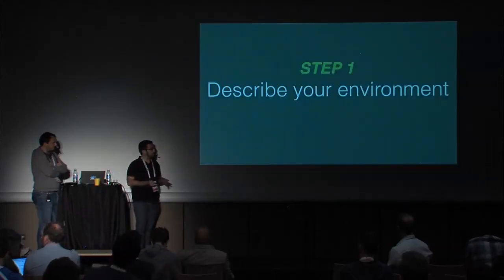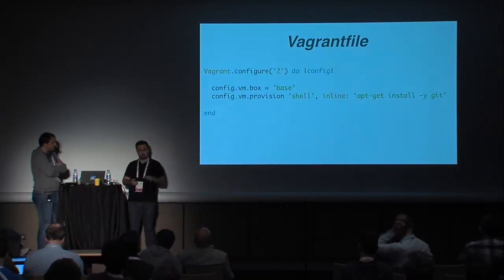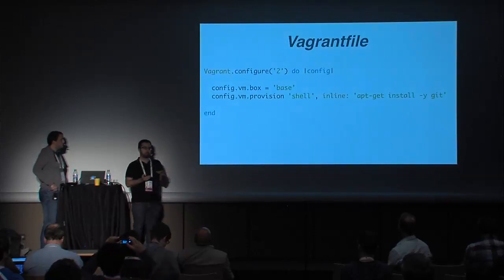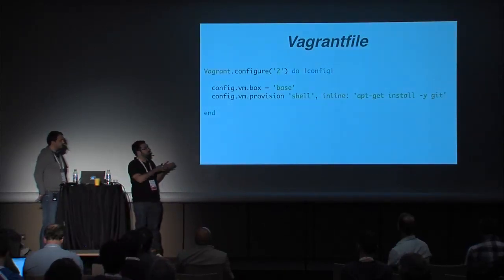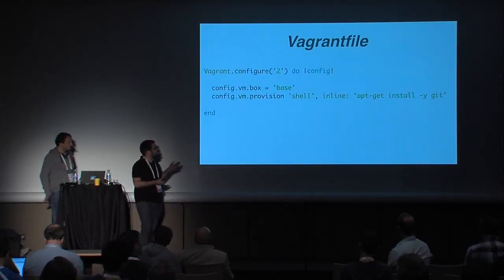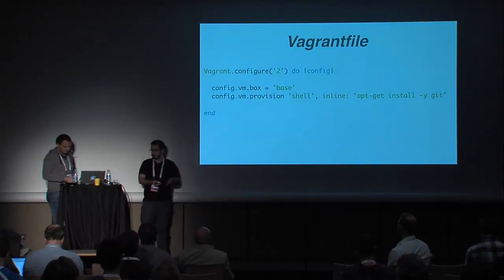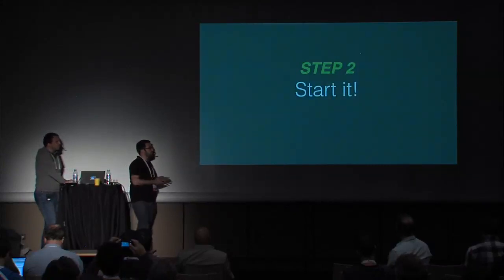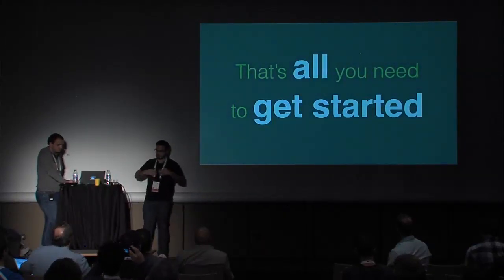The first step is to describe your environment in a Vagrantfile. This is a very simple Vagrantfile that just takes two parameters. The first one is the box — you can think of it like the OpenStack image; it's an operating system used to create instances. The second parameter is a provisioning script. In this environment, I just want to install Git and be able to use it. Once you have created your Vagrantfile, in the same folder you just run 'vagrant up' and you are ready to go.